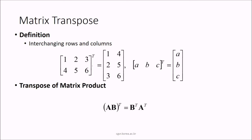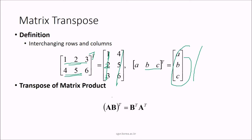Transpose is the interchanging of rows and columns. For example, if rows are [1,2,3] and [4,5,6], after transposing, the first row becomes the first column. An important property: the transpose of a product (AB)ᵀ = Bᵀ·Aᵀ — first take Bᵀ then Aᵀ.